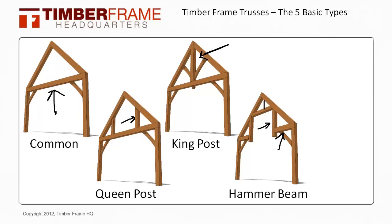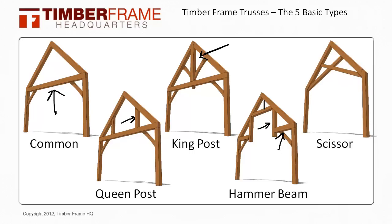The final truss design is the scissor truss. This has two beams that run from the lower part of the rafter to the opposing rafter, crisscrossing each other to create a unique and loved look. While sometimes difficult to figure out the best way to join the timbers in the middle, it can often solve difficult span requirements while adding character to the frame.